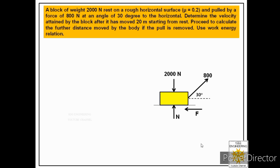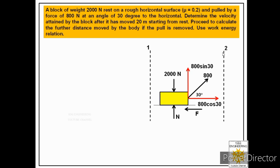We resolve the applied force into its components: along the horizontal we have 800 cos 30, and along the vertical we have 800 sin 30. We then define two positions: position 1, where the block is at rest, and position 2, where the block has covered 20 meters from position 1. At position 1, velocity v1 equals zero since the system starts from rest. At position 2, the velocity v2 is what we need to find. We will apply the work-energy principle to get that answer.